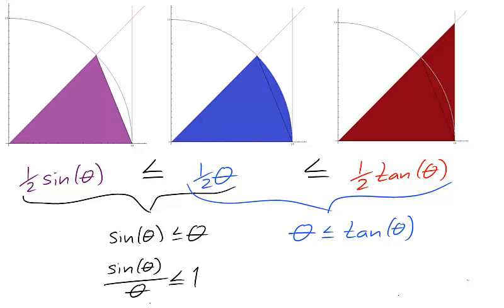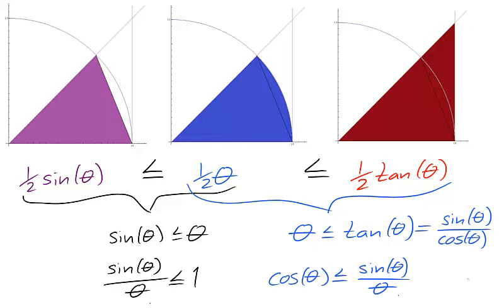From our second inequality, we can multiply by 2 to find that theta is less than or equal to tangent of theta. Recall that tangent is the same as sine over cosine. We can divide by theta and multiply by cosine, and we have that cosine theta is less than or equal to sine theta over theta. Notice that the direction of the inequality is unchanged, as both cosine theta and theta are positive, due to theta being in the first quadrant.